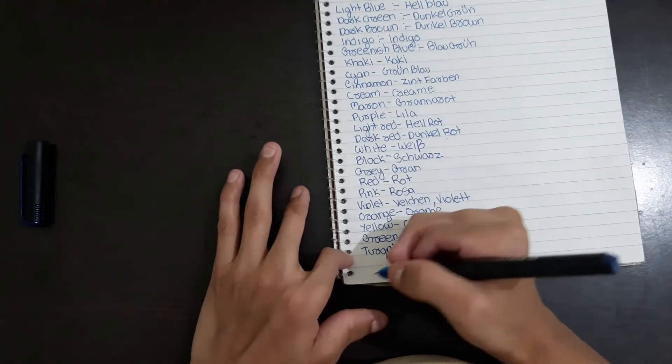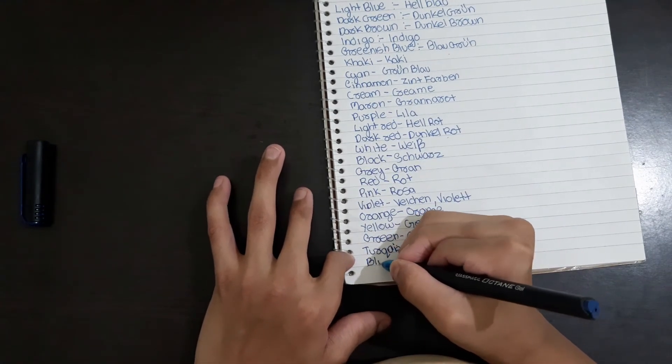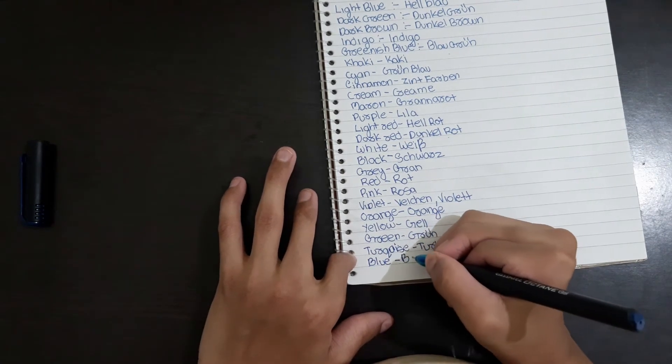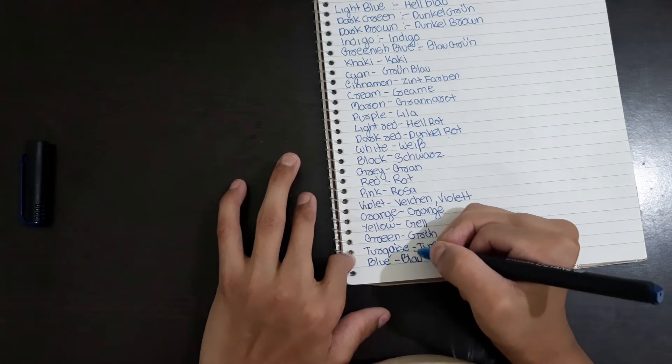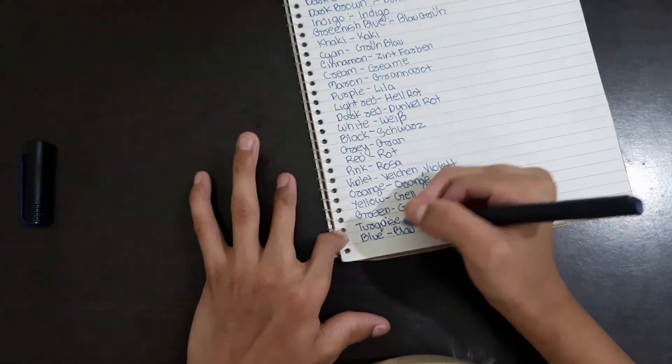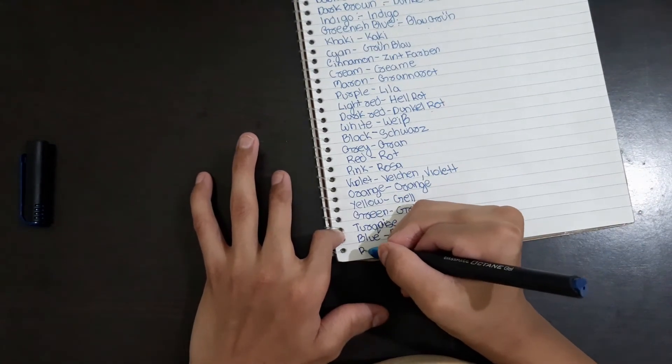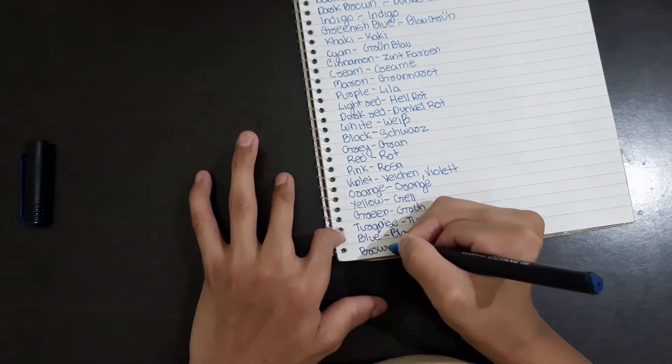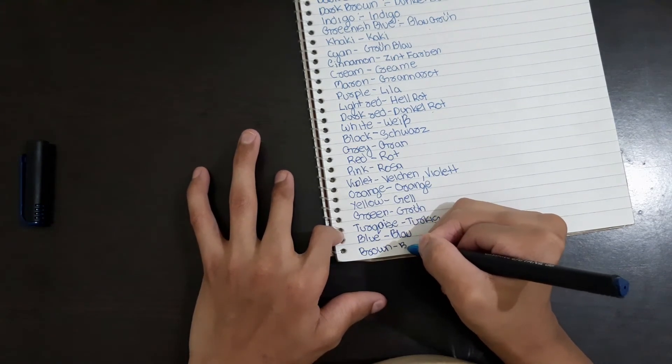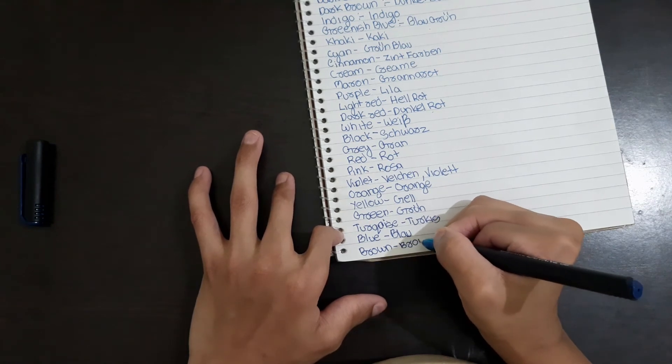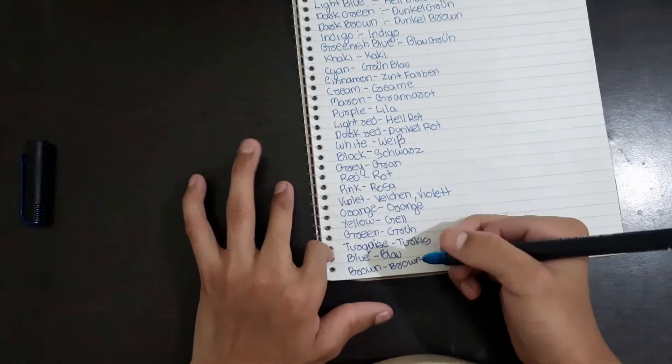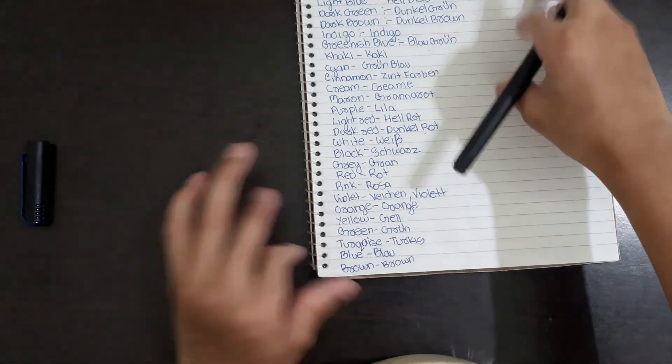Blue means Blau. Now brown, brown is also the same. Now I will strike one line and write here also.